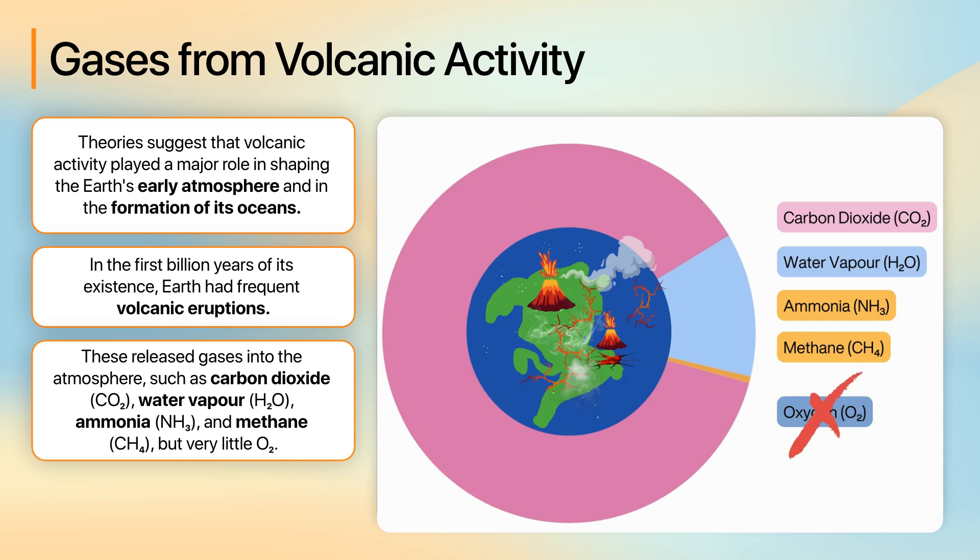These eruptions released a variety of gases into the atmosphere, the most important of which were carbon dioxide, water vapour, ammonia and methane. Notably, there was little to no free oxygen in this early atmosphere. As a result, Earth's atmosphere at that time was very different from the one we know today.